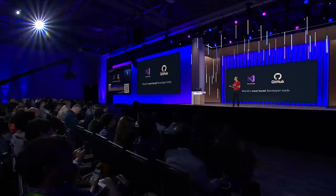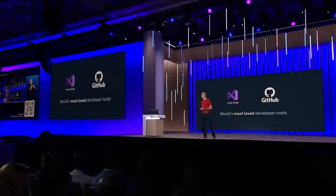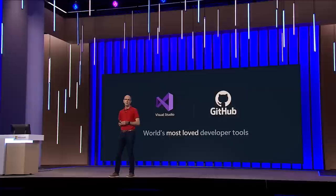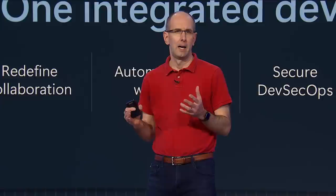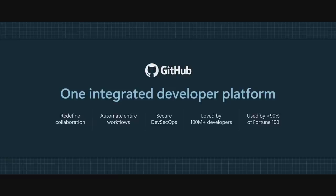The Visual Studio family of products, which includes both Visual Studio and Visual Studio Code, are now the most widely used development tools in the entire world across all languages and platforms. GitHub is used by over a hundred million developers and is literally the home of open source. GitHub also provides developers and enterprises with an integrated end-to-end developer platform that can be used to collaborate, automate, and secure DevOps solutions.